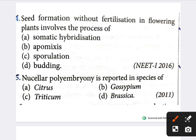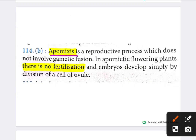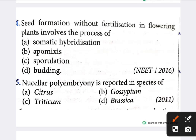Next question: seed formation without fertilization in flowering plants involves the process of which of the following? Options include somatic hybridization, apomixis, syngamy, and parthenogenesis. The answer is apomixis. Apomixis is a reproductive process that does not involve gametic fusion; in apomixis, the embryo develops simply by division of cells of the ovule.